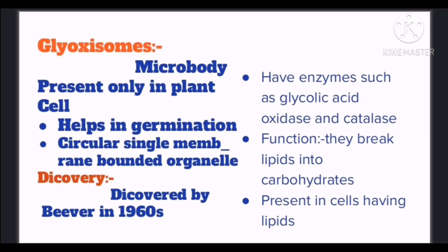Another type of microbody is the glyoxysome, present only in plant cells, especially in cells that are rich in lipids such as seeds. It gets its name from its function — the glyoxylate cycle. This organelle converts lipid to carbohydrates, and from these carbohydrates, energy is produced which is later used by the plant for germination and growth. It is a single-membrane-bounded organelle, discovered by Beevers in the 1960s. In its matrix, oxidative enzymes are present such as catalase and glycolic acid oxidase. The enzymes facilitate the conversion of lipids into carbohydrates, and the process of converting lipids into carbohydrates in glyoxysomes in the presence of enzymes is called the glyoxylate cycle.